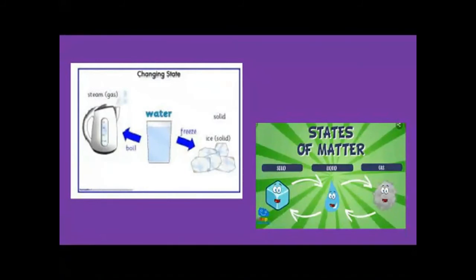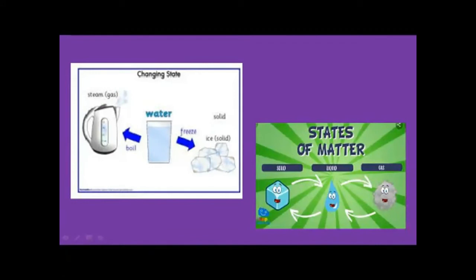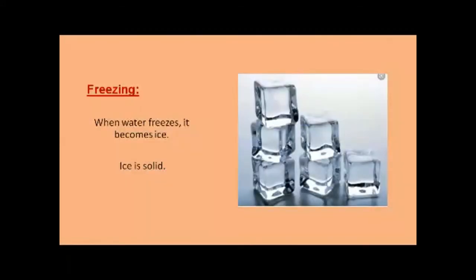There are three states of matter: solid, liquid, and gas. Matter can change its state from solid to liquid to gas. For example, ice is solid. Water is liquid. If you boil the water, it becomes a gas — vapor. We will now learn this in more detail.